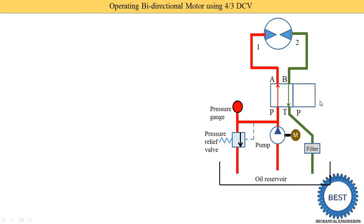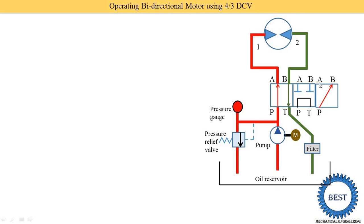Now here you see the second position. In the second position, again four ports — all four ports are represented in one position. Port P and port T are connected — this is called the tandem center mid position. Port A and port B are closed. Now in the third position — the second shifted position — port P is connected with port B, so the line is drawn inclined with the arrow in the upward direction. Port A is connected with port T, so the line is drawn downward — oil flows from A to T. It is operated manually, so here we draw the symbol of a lever.